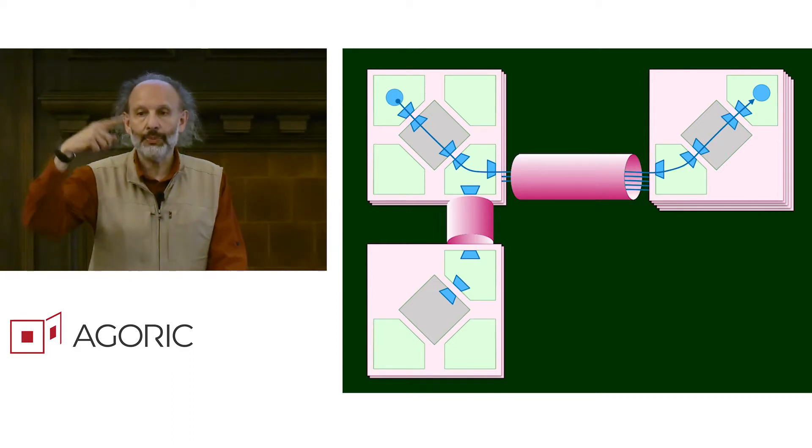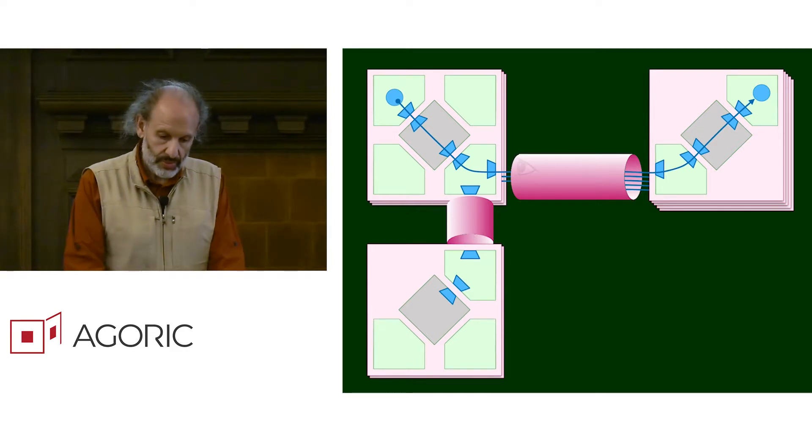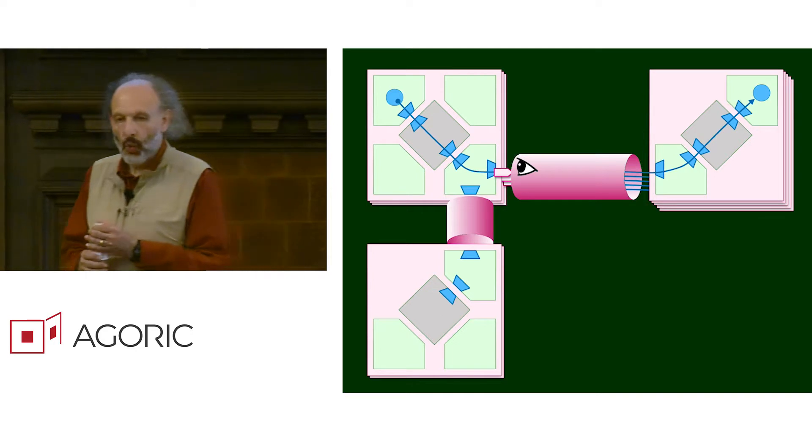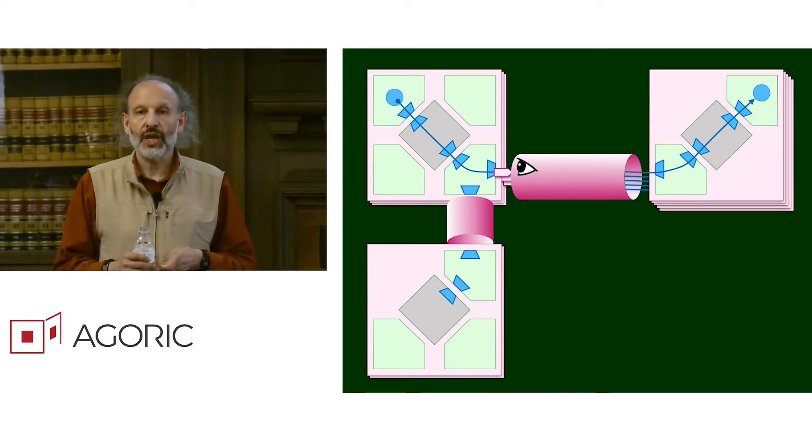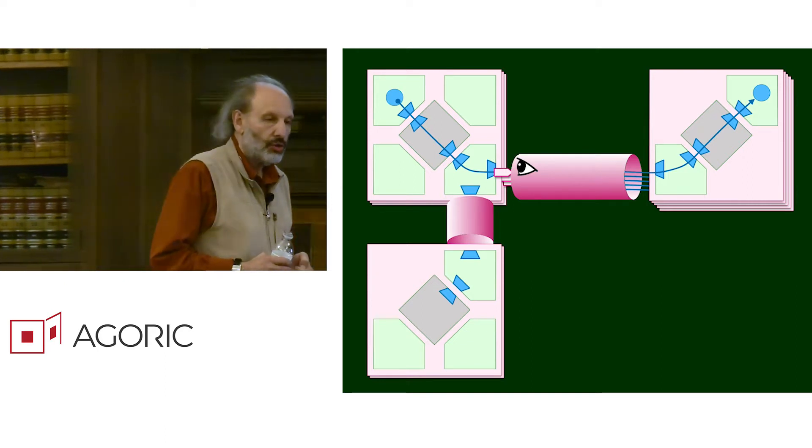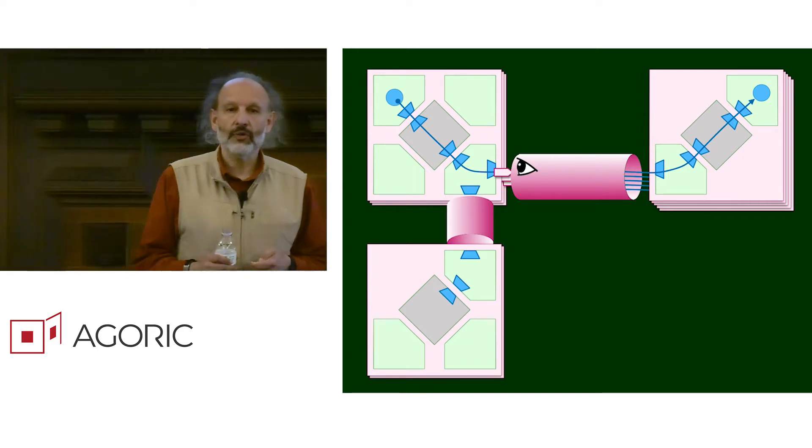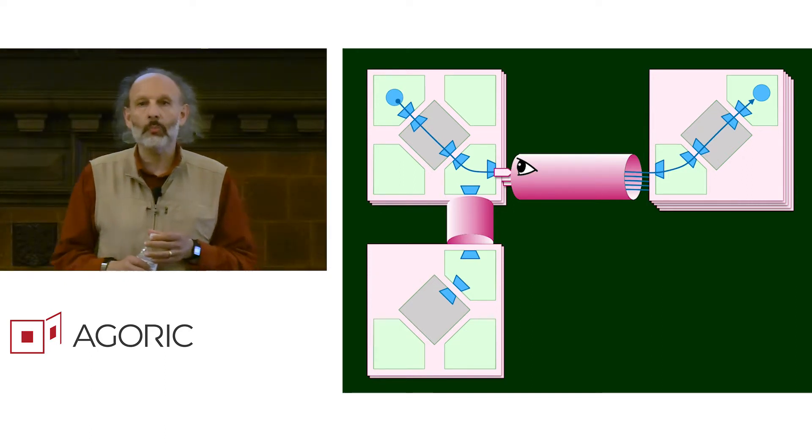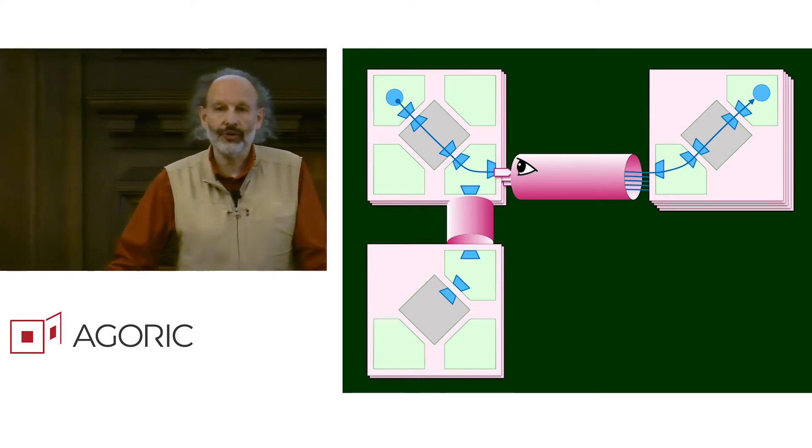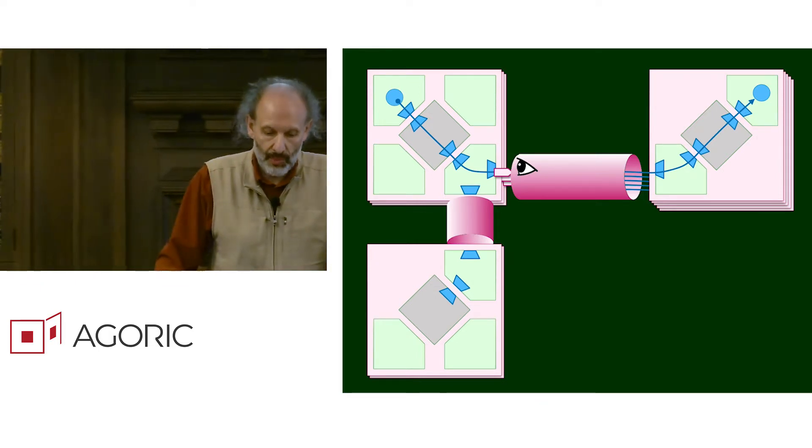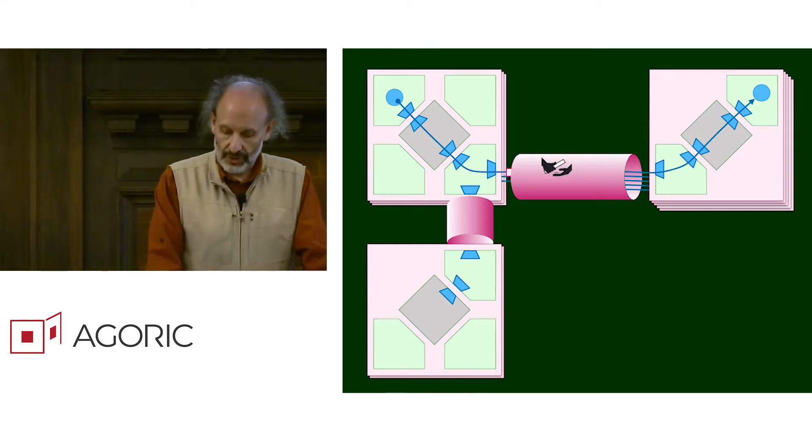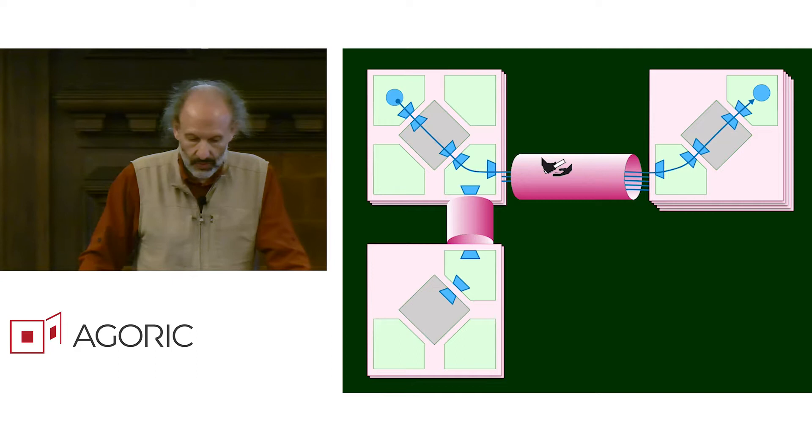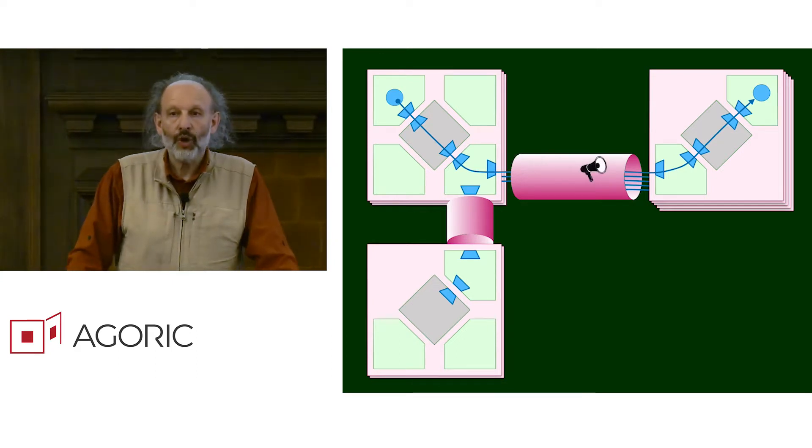Each of these pipes represents an IBC channel. The channel watches the chains on each side, watches the chain on the left to look at the log to see if a message got logged that's marked as a message intended for delivery to another chain. When it sees that, it relays it to a broadcast mechanism.